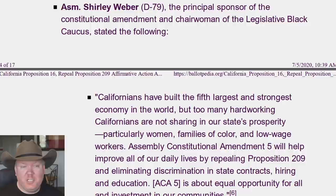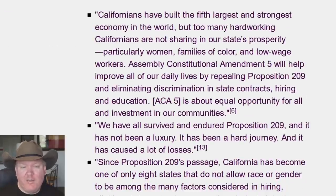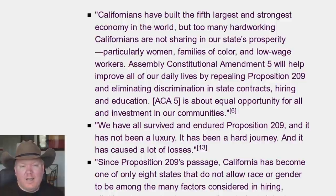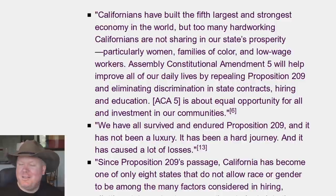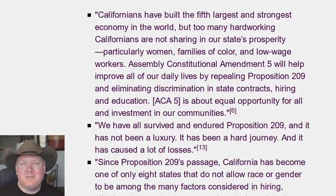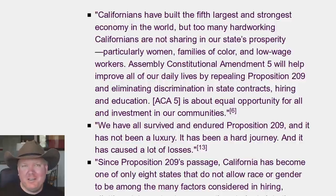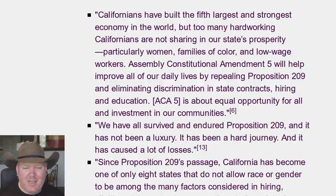According to Shirley Weber, Democrat from the 79th District: 'Californians have the fifth largest and strongest economy in the world, but too many hardworking Californians are not sharing in our state's prosperity, particularly women, families of color, and low-wage workers. Assembly Constitutional Amendment 5 will help improve our daily lives by repealing Proposition 209 and eliminating discrimination in state contracts.' Well, I'm not sure you know how this works, because the current law eliminates discrimination. You specifically want to un-eliminate discrimination. We're apparently eliminating discrimination by discriminating. ACA 5 is about equal opportunity, even though we're specifically not doing that.